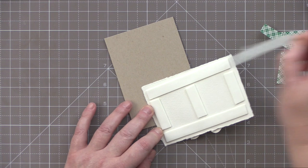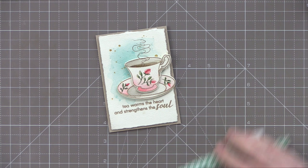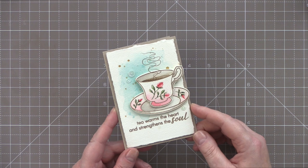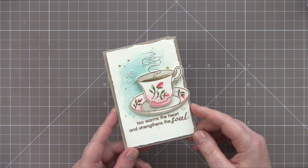Finally I've added lots of foam adhesive to the back of the watercolored panel and then attached that to a side folding kraft card base. I added a few sequins to accent and attached those with Ranger Multi Medium Matte. And that finishes this vintage teacup watercolor card inspired by the teacups of my grandmother and mother.